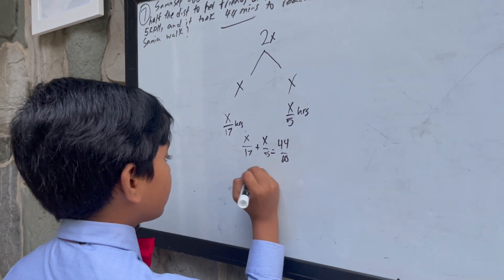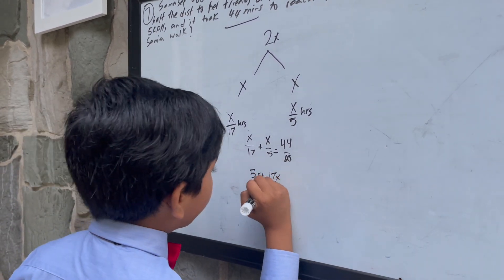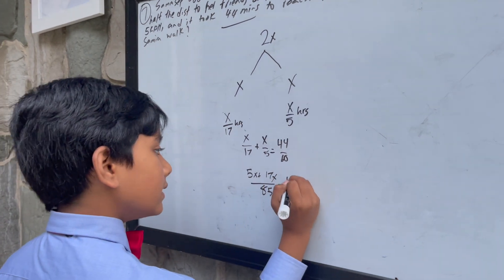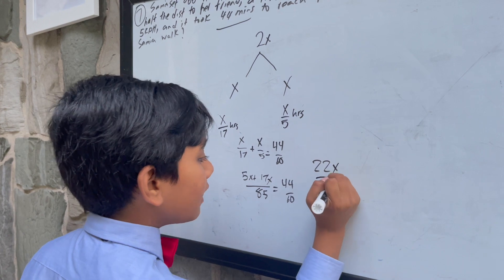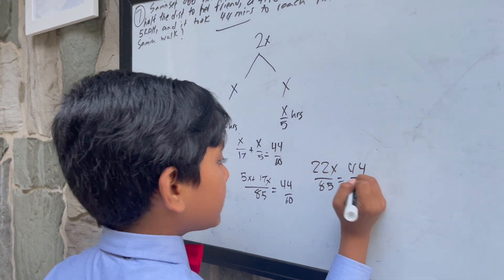So it's 5X plus 17X over 85 is equal to 44 over 60. So 22X over 85 equals 44 over 60.